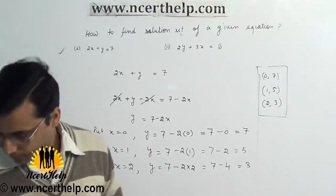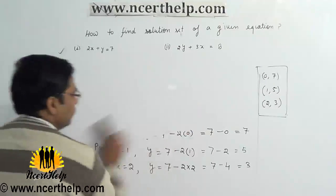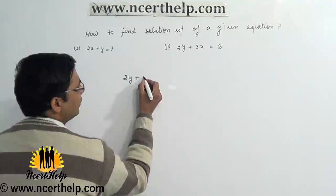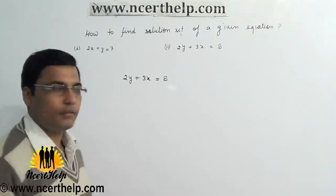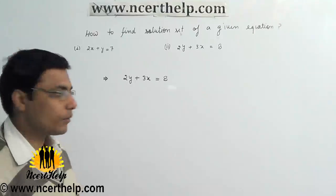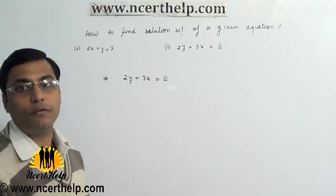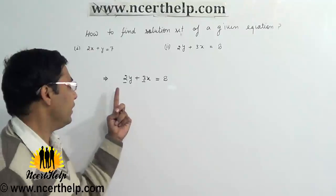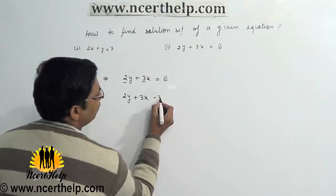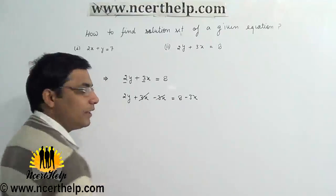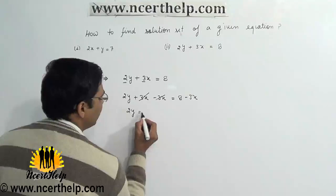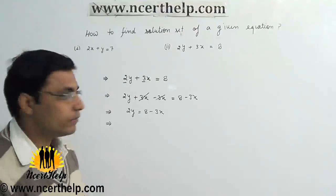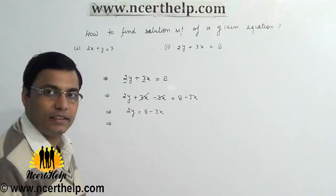Now consider the second problem: 2y plus 3x equals 7. In this question, which variable has the higher coefficient? Here 3 is greater than 2, so we will subtract 3x from both sides. 3x cancels out and we get 2y equals 8 minus 3x. We want to find the solution set, so we will find the value of one variable.